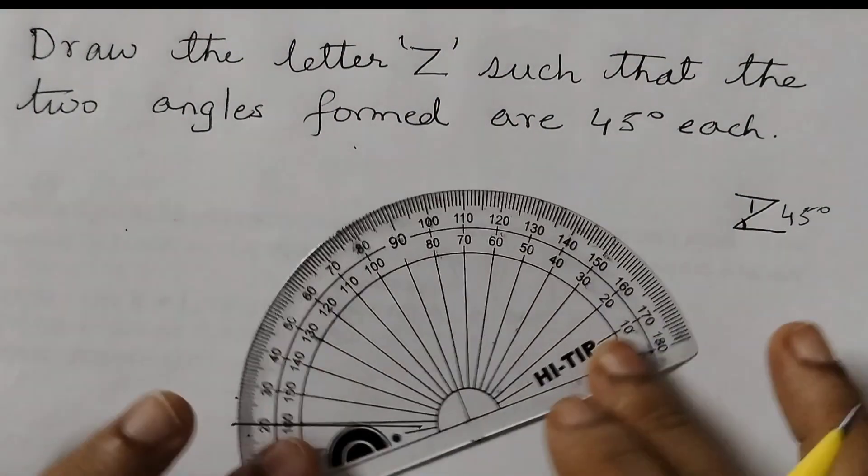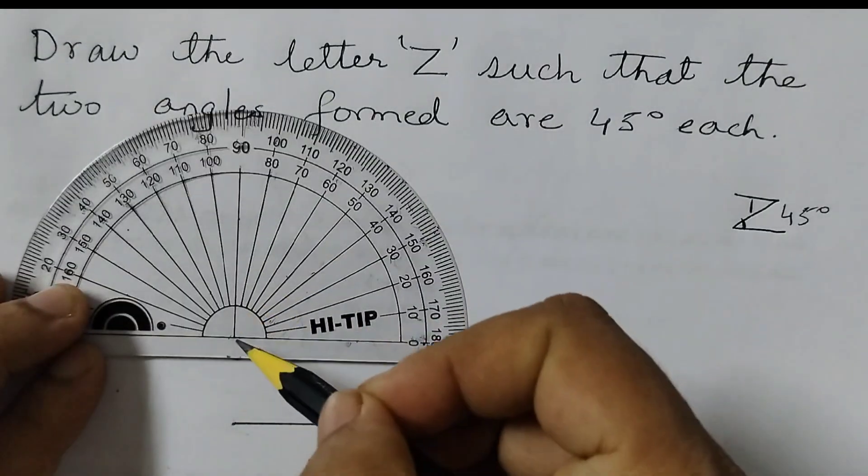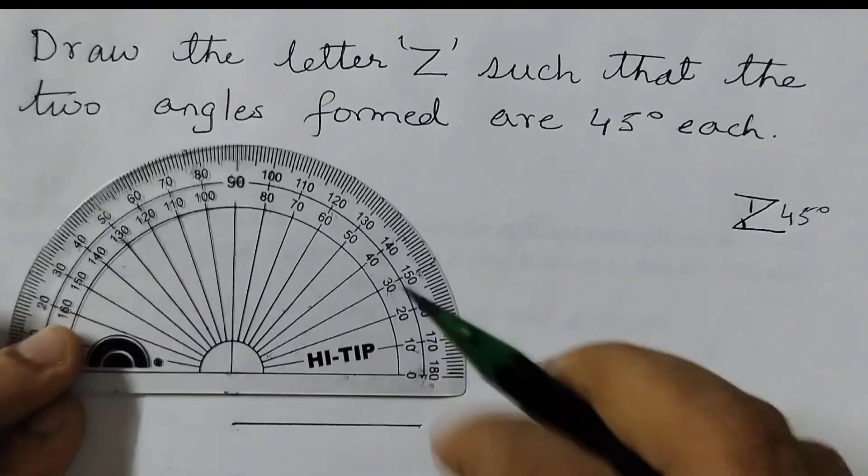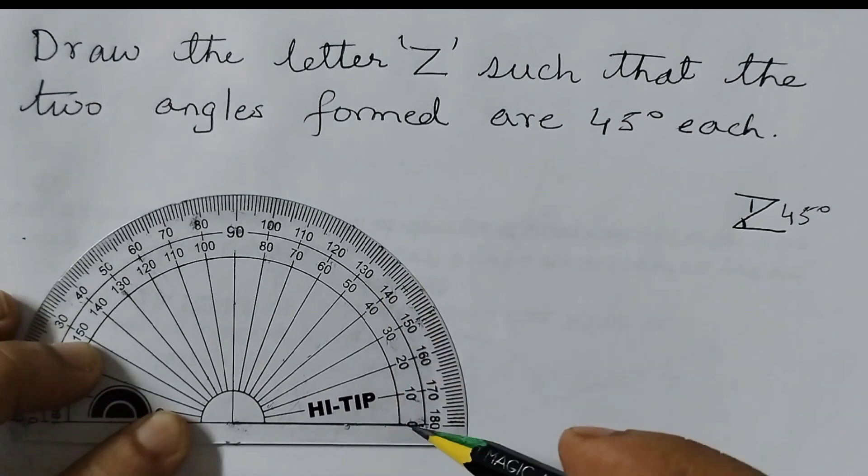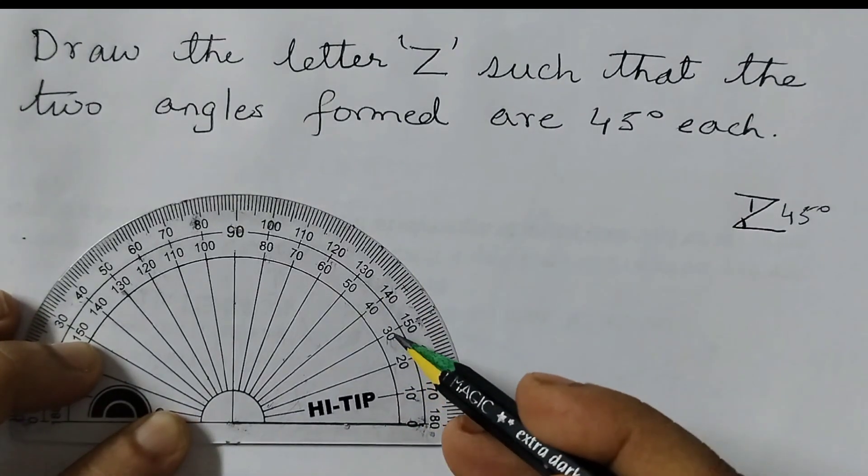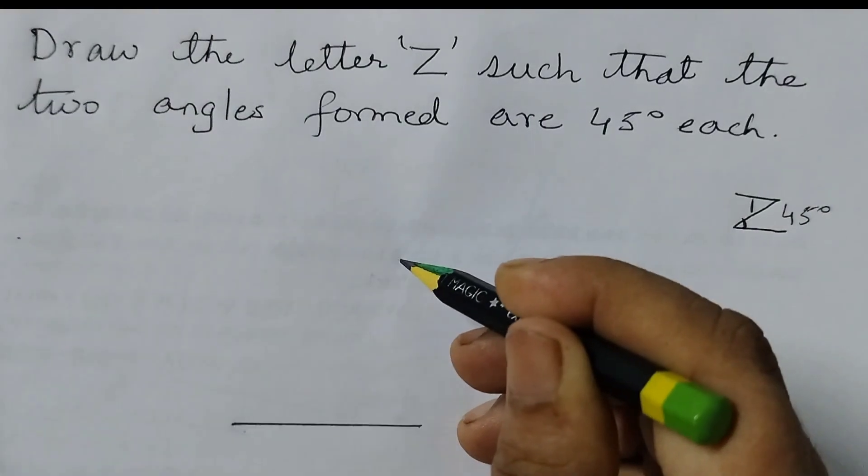Now I will take my protractor and I will make an angle of 45 degrees. So this center here and this vertex should match. So place it like this and start the reading from 0. 0, 10, 20, 30, 40 and then 45 degrees. Mark a point here.